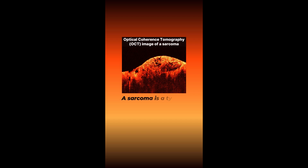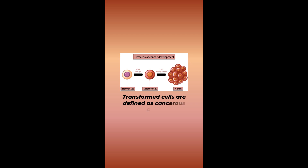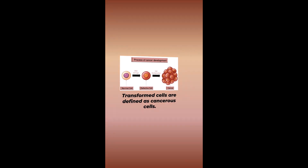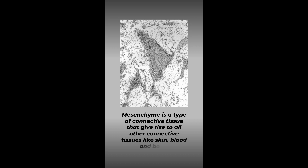A sarcoma is a type of cancer that arises from transformed cells of mesenchymal origin. Transformed cells are defined as cancerous cells. Mesenchyme is a type of connective tissue that gives rise to all other connective tissues like skin, blood, and bone.